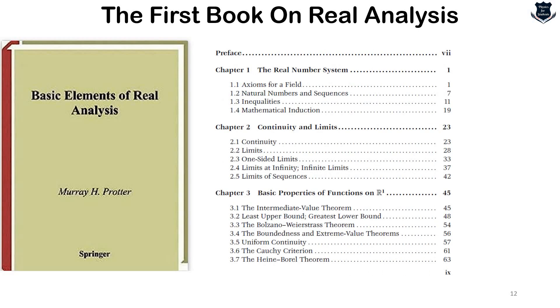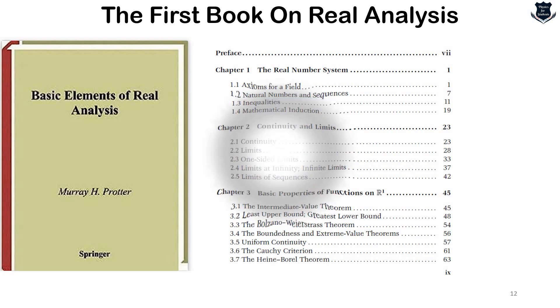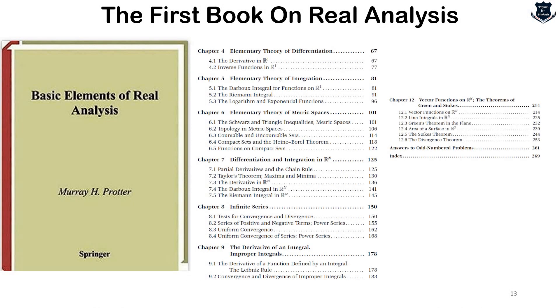Let us look into what are the content of the book. So, you see it actually starts with the real number system, that is the beauty. It will basically teach you axioms, inequalities, mathematical induction. Then it goes into continuity and limits, obviously required. Then it will go into basic properties of functions like Bolzano-Weierstrass theorem, uniformity, etc. It is a very step by step approach. Then it will take into elementary theory of differentiation, elementary theory of integration, elementary theory of matrix spaces, differentiation in finite series. Then it will go into derivative of an integral and vector functions or Rn. So, Professor Protter's book is quite comprehensive detail and now let us look into the next part of the video where we will be talking about the content part.